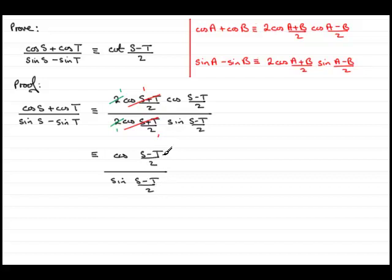Now we've got the same angle here and here, so whenever you get the cosine of an angle over the sine of the same angle, it is always cotangent of that angle. So what we've got here is the cot of s minus t over 2, which is what we had to prove.